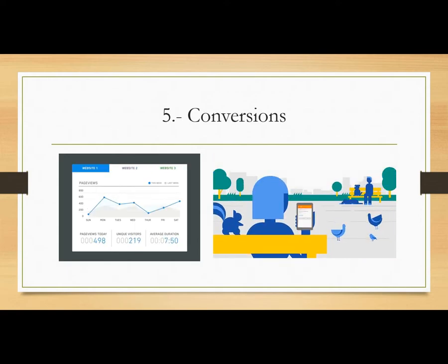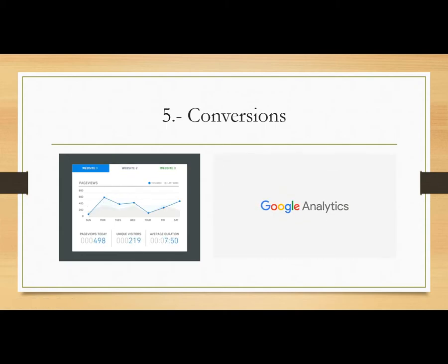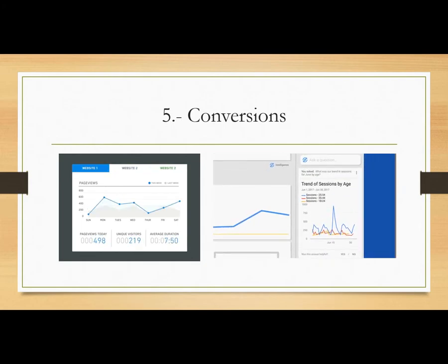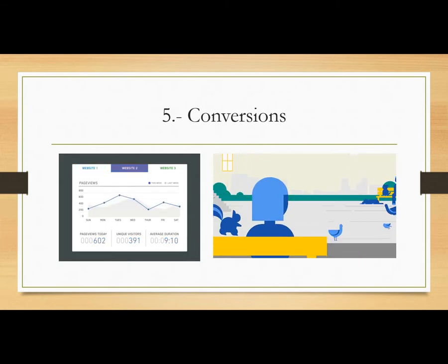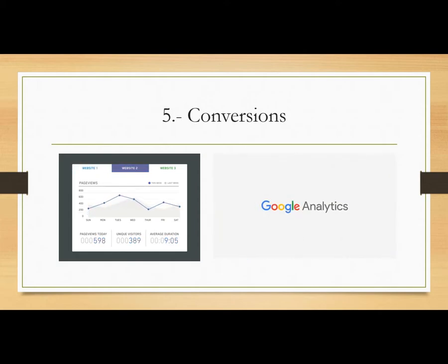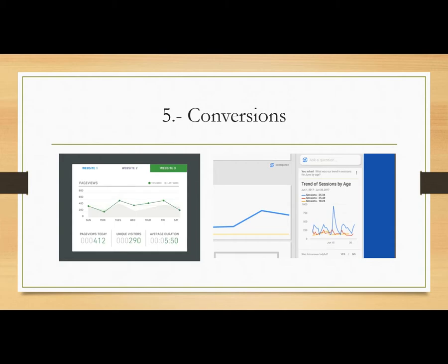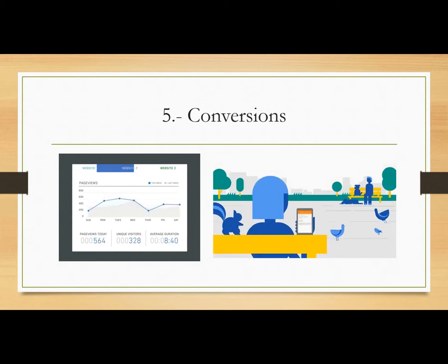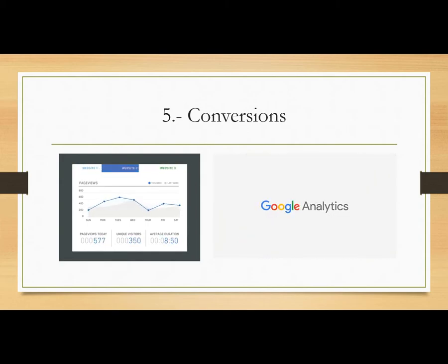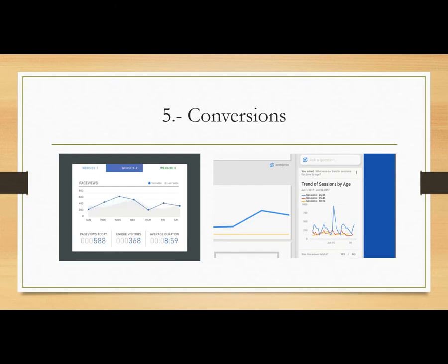As you can see right there on the second image, there is an option to ask Google Analytics for a specific report — for example, the trend of sessions by age, where visitors are from, what items they're looking for, or what they actually typed in the browser to get to your website. Basically these are the five sections of Google Analytics.